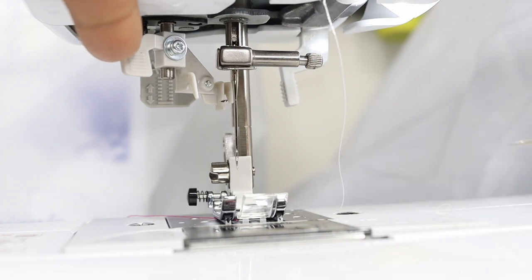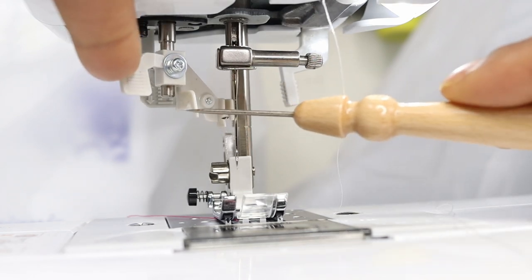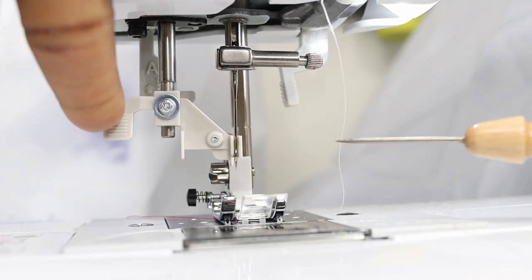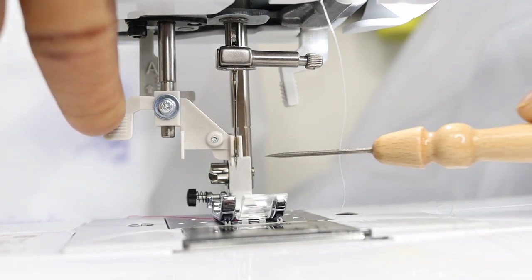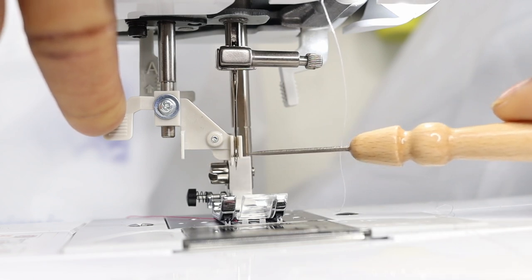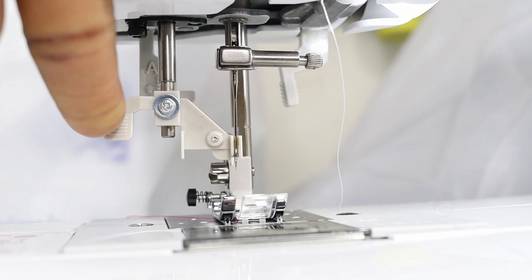Next, we want to pull our thread and hook it onto that guide there that is located on our lever, and then pull that thread in front of the eye of the needle and make sure it gets caught into that little silver hook that is going to be through the eye of the needle.